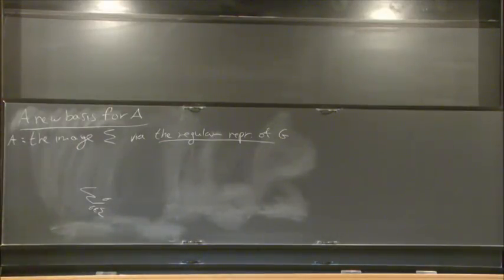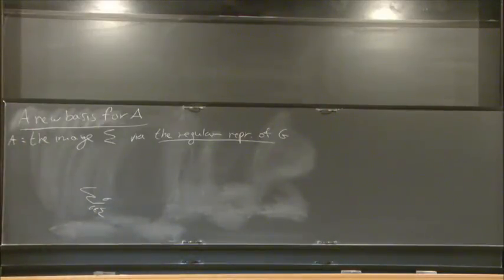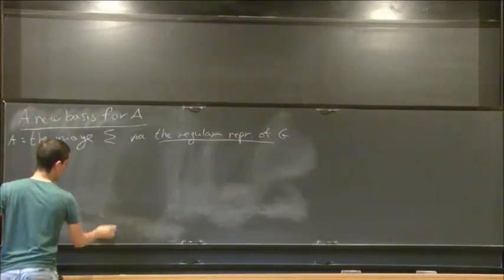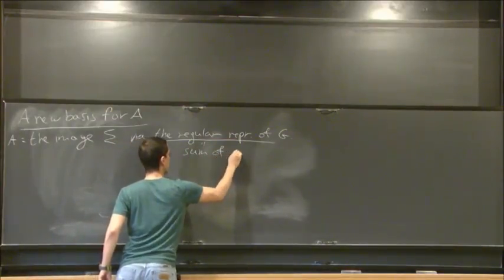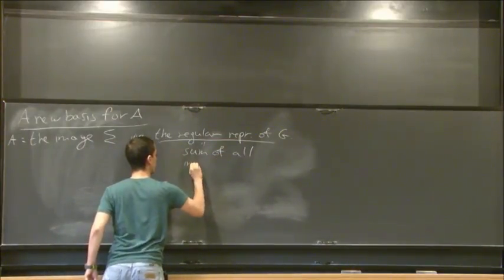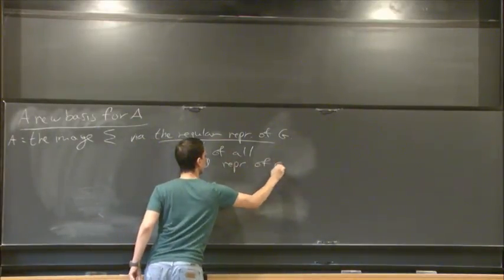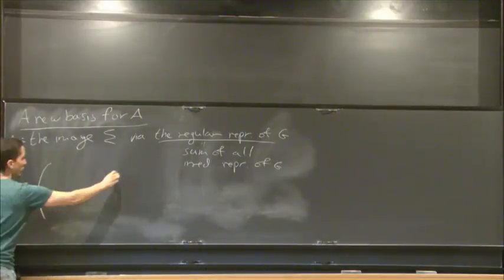So this means that I can, in other words, it means that I can take this adjacency matrix and change the basis such that the matrix become a block matrix. So A becomes a block matrix. This is a sum of all irreducible representations of G.